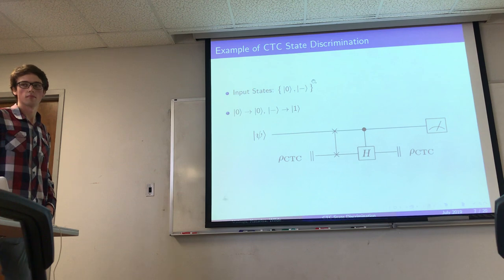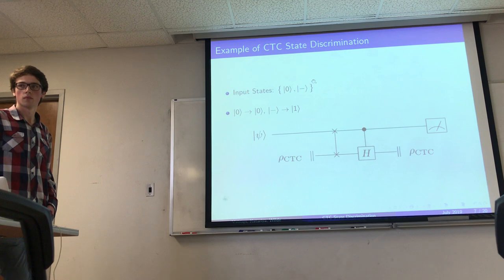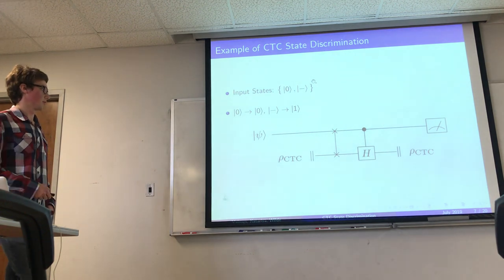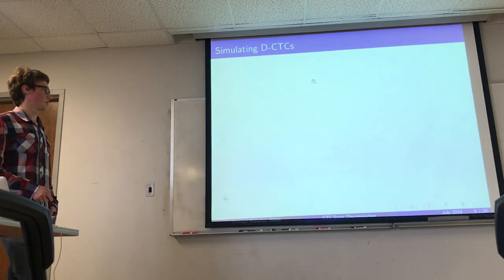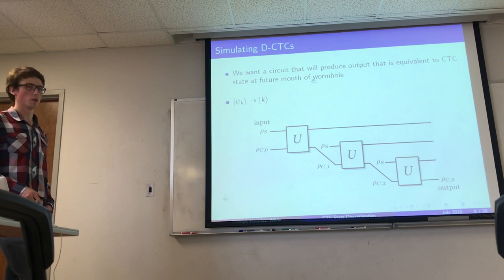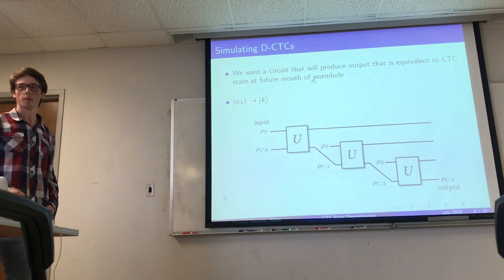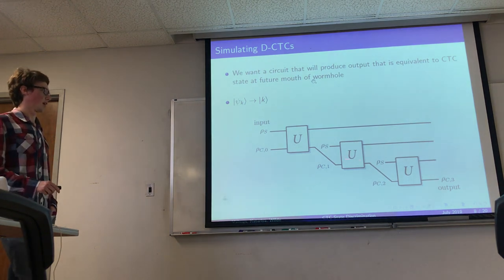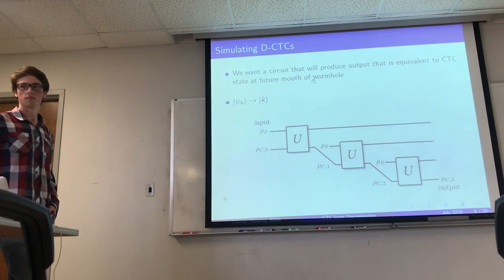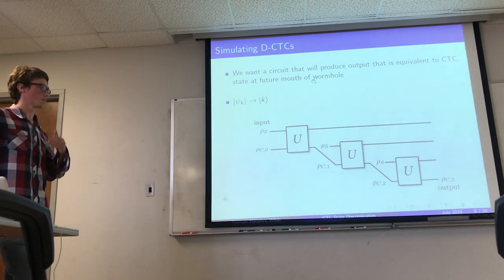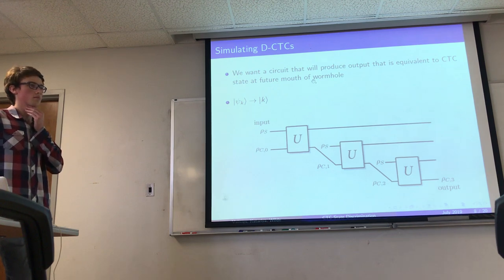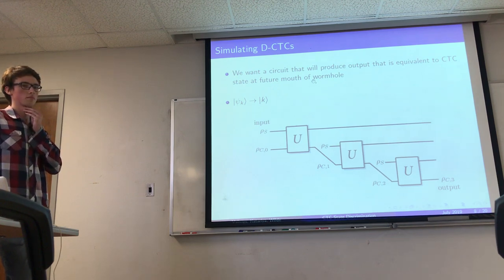The circuit demonstrates convergence to the fixed point in practical quantum mechanics — what we could do in a laboratory. The classical Markov chain structure comes about because this circuit simulates a classical random walk by measuring the outcome after each iteration.